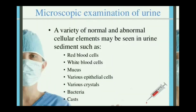A variety of normal and abnormal cellular elements may be seen in urine sediment, such as red blood cells, white blood cells, mucus, various epithelial cells, various crystals, bacteria, and casts.